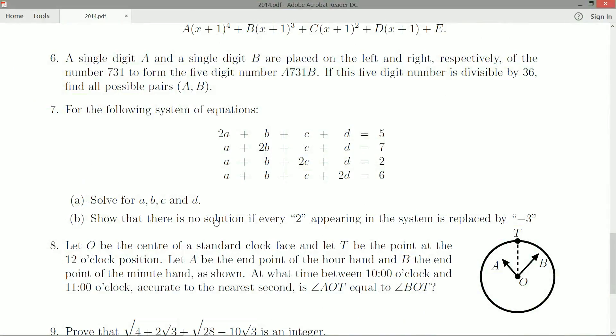So we got a two-parter here, question seven. For the system of equations, 2a plus b plus c plus d is, so it looks like we got two times the variable along the diagonal, and other than that it's just a plus b plus c plus d. And we got 5, 7, 2, and 6.